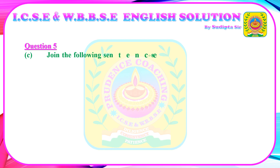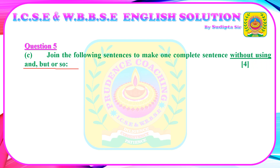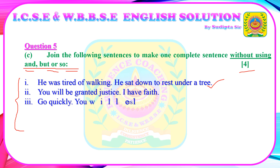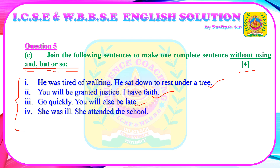Question 5C: Join the following sentences to make one complete sentence without using 'and', 'but', 'or', or 'so'. You will get 4 marks for 4 questions. 1) He was tired of walking. He sat down to rest under a tree. 2) He will be granted justice. I have faith. 3) Go quickly. You will else be late. 4) She was ill. She attended the school. Write your answers in the comment box and our faculty will provide the correct answers.